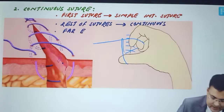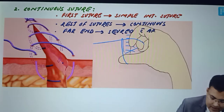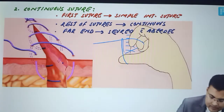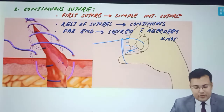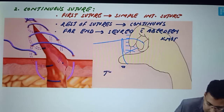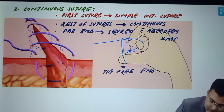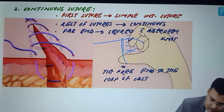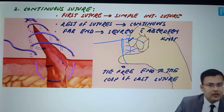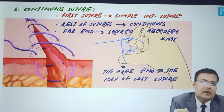The far end is secured with an Aberdeen knot — we tie the free end to the loop of the last suture. An example: in laparotomy, when we are suturing the rectus sheath with prolene, we generally take the continuous suture.